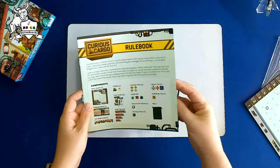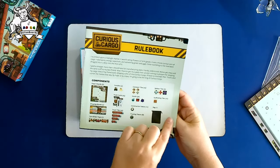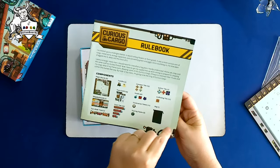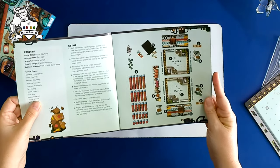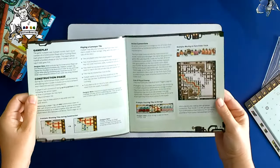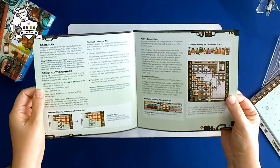There we go, instructions. Components, player boards, that's what those are. Shipping boards, track order, set up, game play.